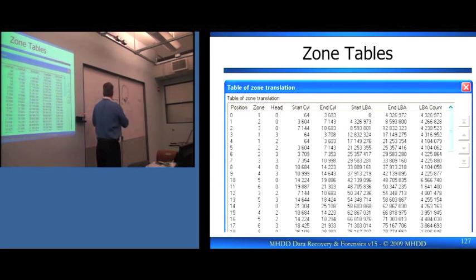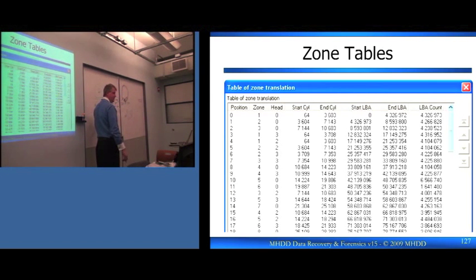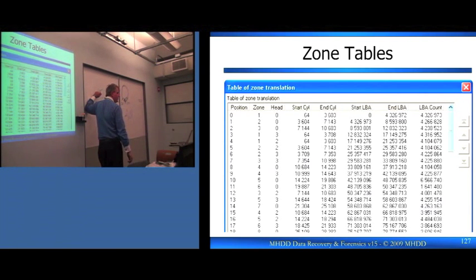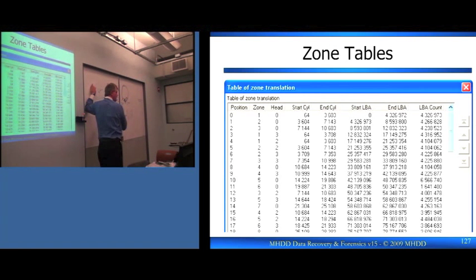LBA zero is out here at the outer edge. Then the max LBA makes its way to the inside. Our higher numbers are toward the center where it's slower because we have less content stored per track. So we go from zero to max LBA. Zone tables are broken up according to how fast the locations are on the platters — like little football fields.